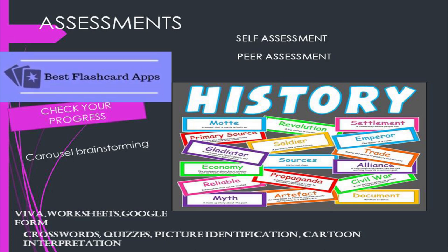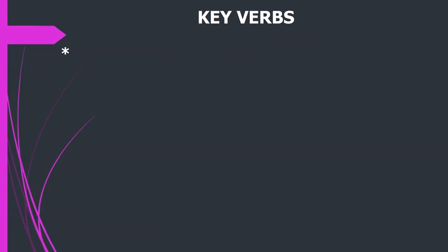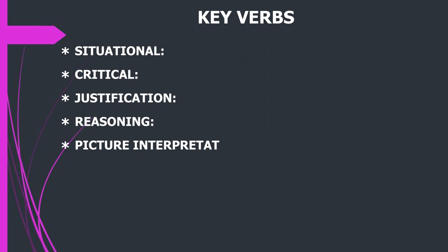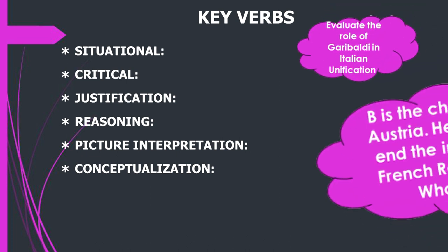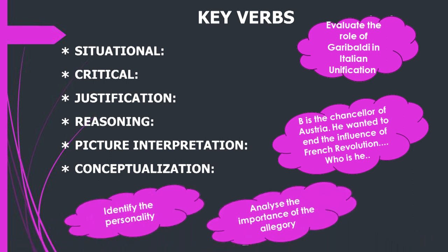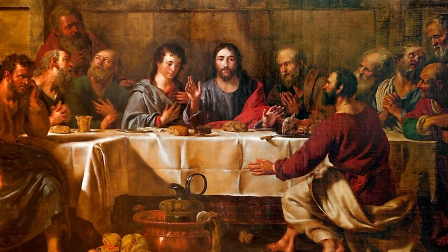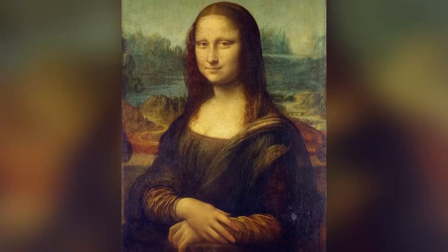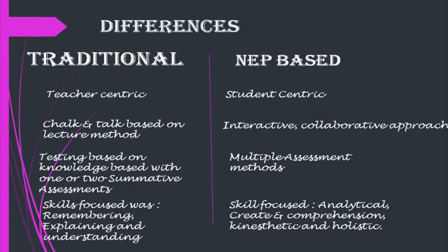Key verbs or power verbs are very important to help a child understand the subject better; for every subject they are different. For history, we can increase a child's interest using power verbs like critical, situational, conceptualization, reasoning, and interpretation. Pictures or paintings in history have always been a matter of interest because a visual aid can create a permanent impact in a child's mind. For history we have not only pictures and paintings, but also cartoon interpretations.